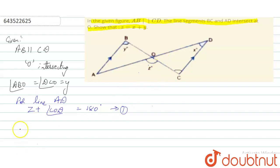And for triangle CDO, we can say X plus Y plus COD is equal to 180 degrees.